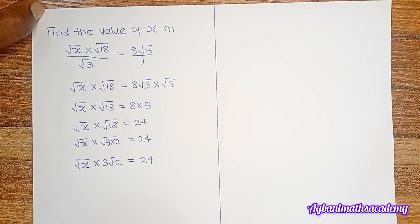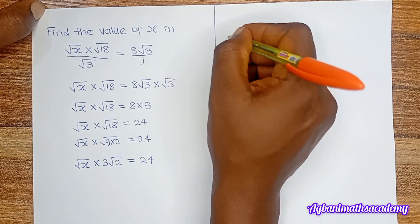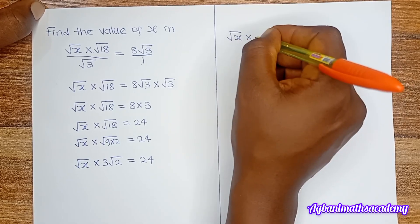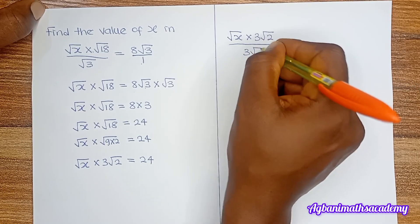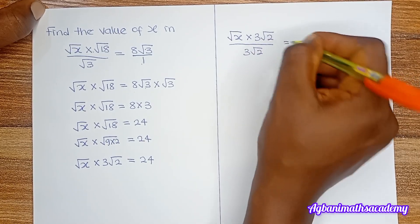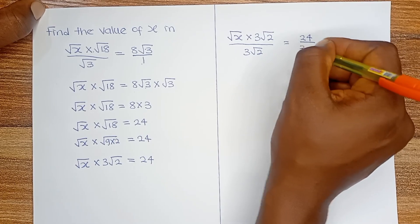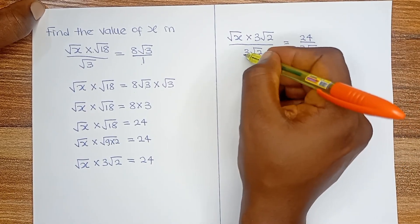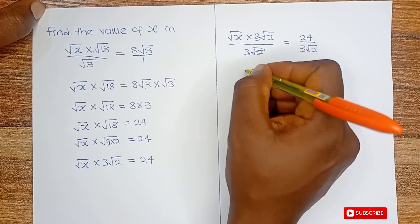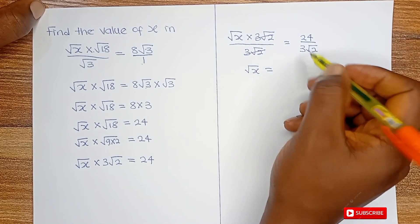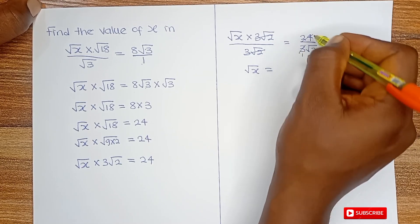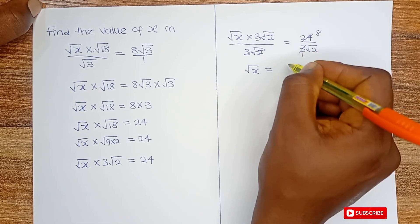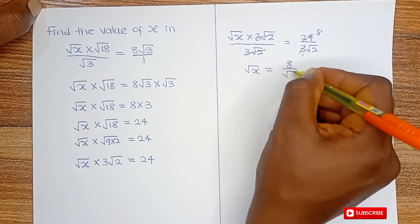In order to have x alone on the left, we divide both sides by 3 root 2. On the left, 3 root 2 cancels out 3 root 2. We have square root of x equals 24 divided by 3 root 2. Then 3 cancels into 24 to give us 8. So on the right we have 8 divided by root 2.